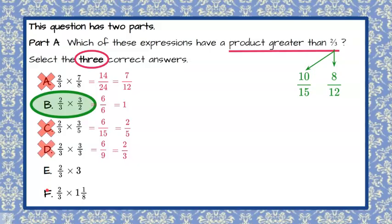Now I'm hoping E and F both are correct because I need two more correct answers. Let's check. When you do two-thirds times 3, remember any whole number has a denominator of 1. So this becomes 2 times 3 is 6, all over 3 times 1 is 3. 6 over 3, or 6 divided by 3, is 2. 2 is definitely greater than two-thirds. So we're going to say E is correct.